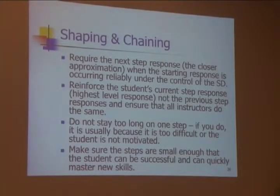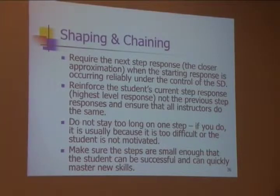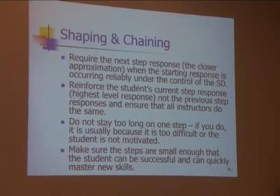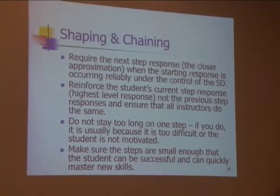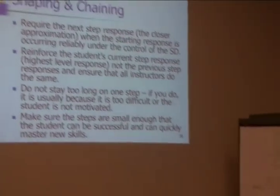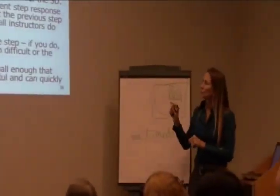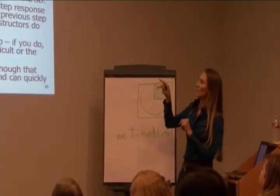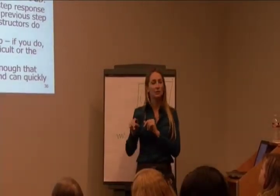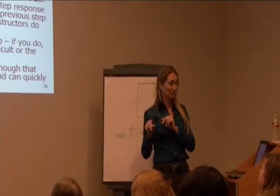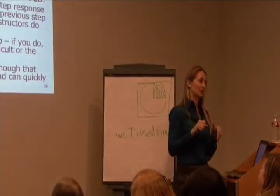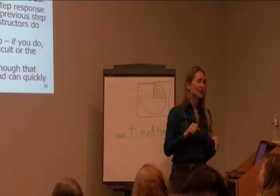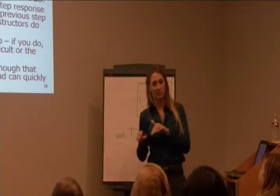You require the next step when the starting response is always occurring under the SD. Don't move on until you know they're reliably doing it and they've generalized it. You reinforce the current step, not the previous step that used to get them the reinforcer. So no longer does he get the cookie when he says 'key' — he now gets it when he says 'uki.'